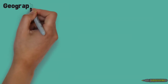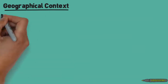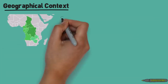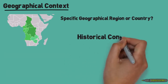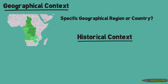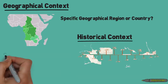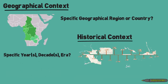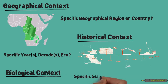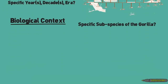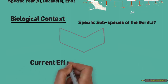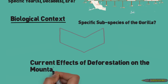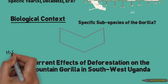For example, you could add some geographical context to your paper. Is there a geographic region or a country in which gorillas are specifically affected by deforestation? Perhaps you want to focus more on a historical context — is there a certain time aspect you want to write about, perhaps the time when deforestation really started to affect gorillas? And third, with this topic, you could also add biological context. Perhaps there's a specific subspecies of the gorilla that you're interested in writing about.